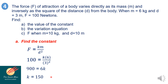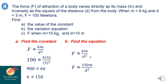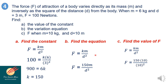Now that K is equal to 150, the equation is F is equal to 150M all over D squared. To find F when M is equal to 10 and D is equal to 10, substitute: F is equal to 150 times 10 all over 100. Simplifying, F is equal to 15. Therefore, the force is equal to 15 Newtons.